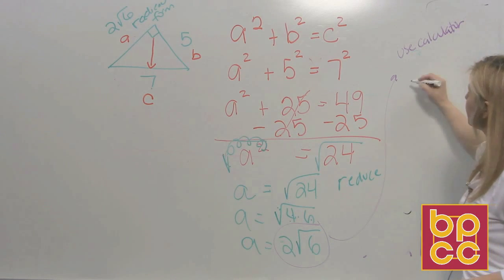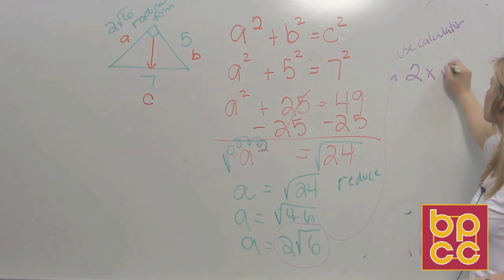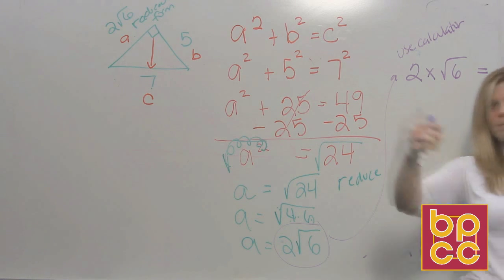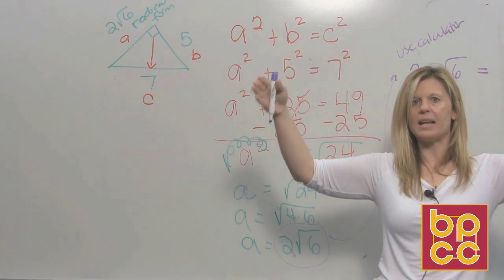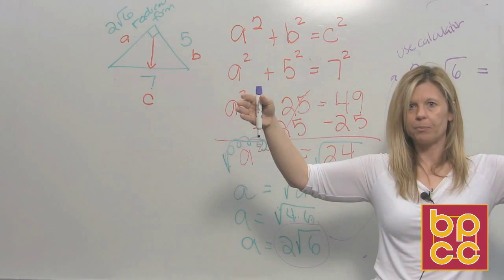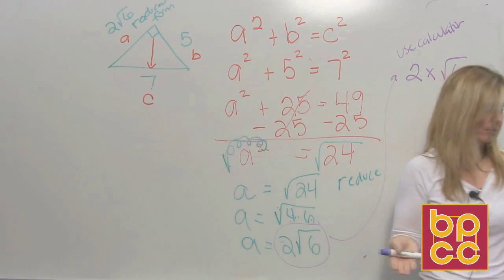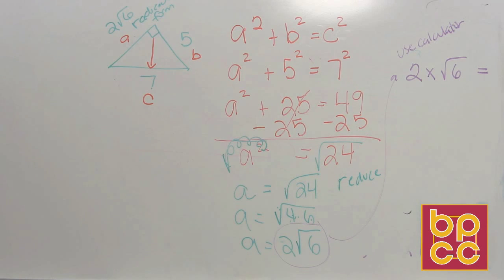If I want to know what this actual number is, I would use my calculator. And you would type in your calculator 2 times square root 6 equals. And what your calculator is going to do is spit out a decimal. And that decimal is going to be very long. It's going to be an irrational number.